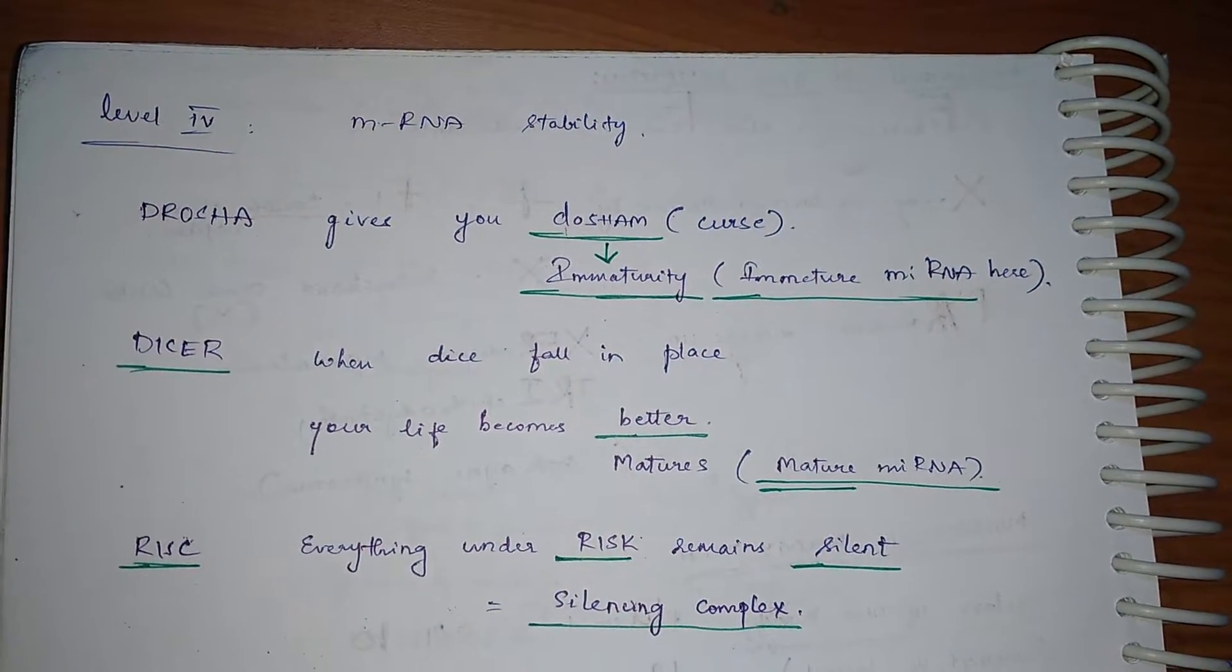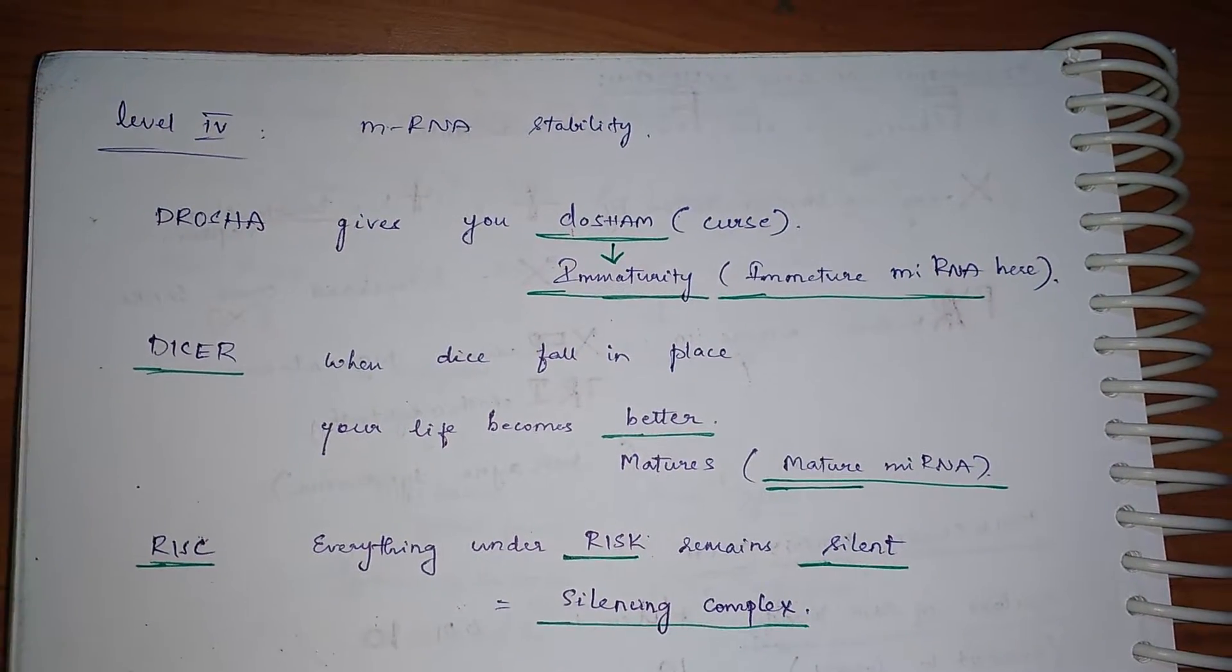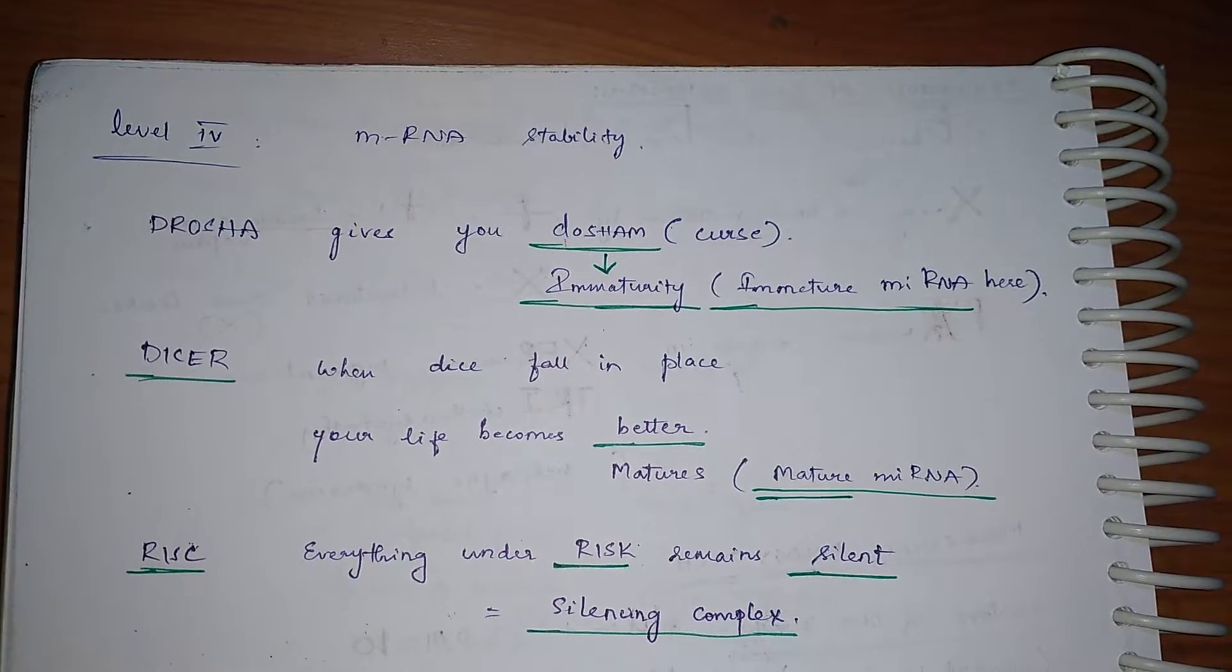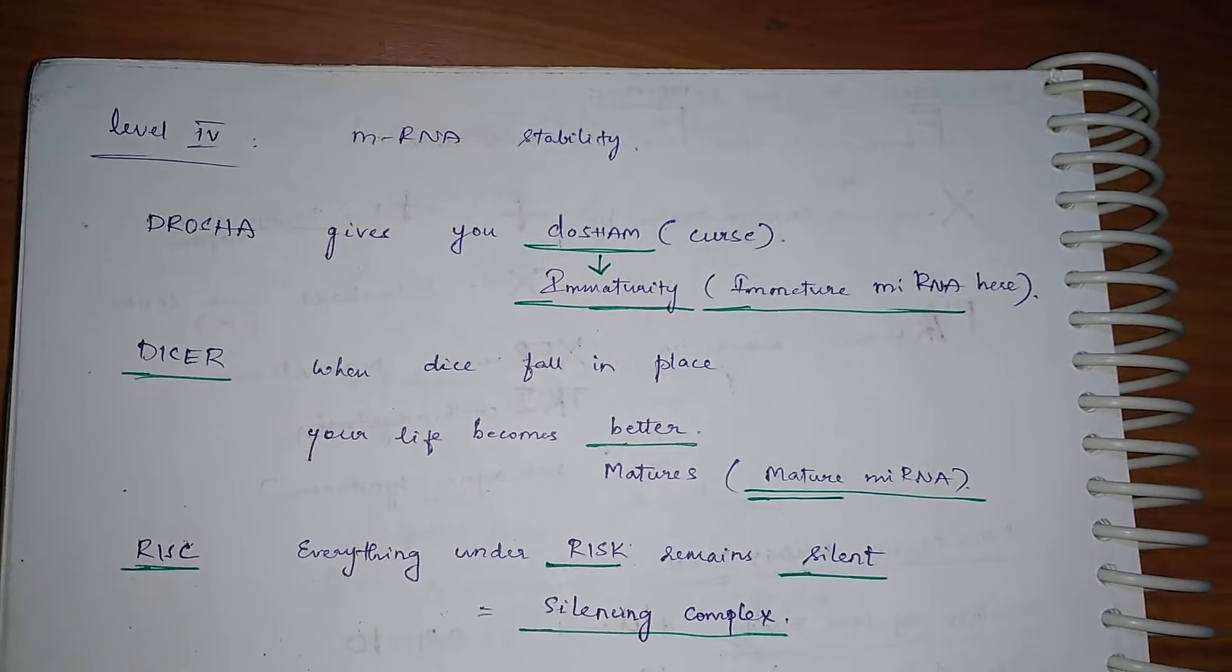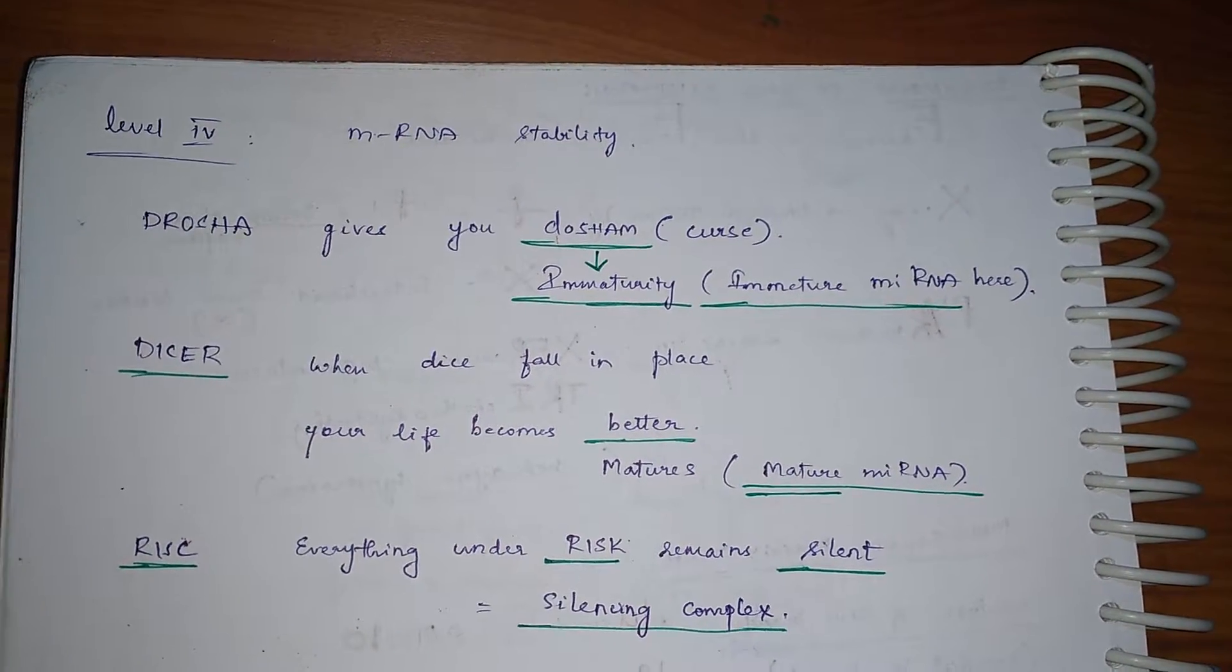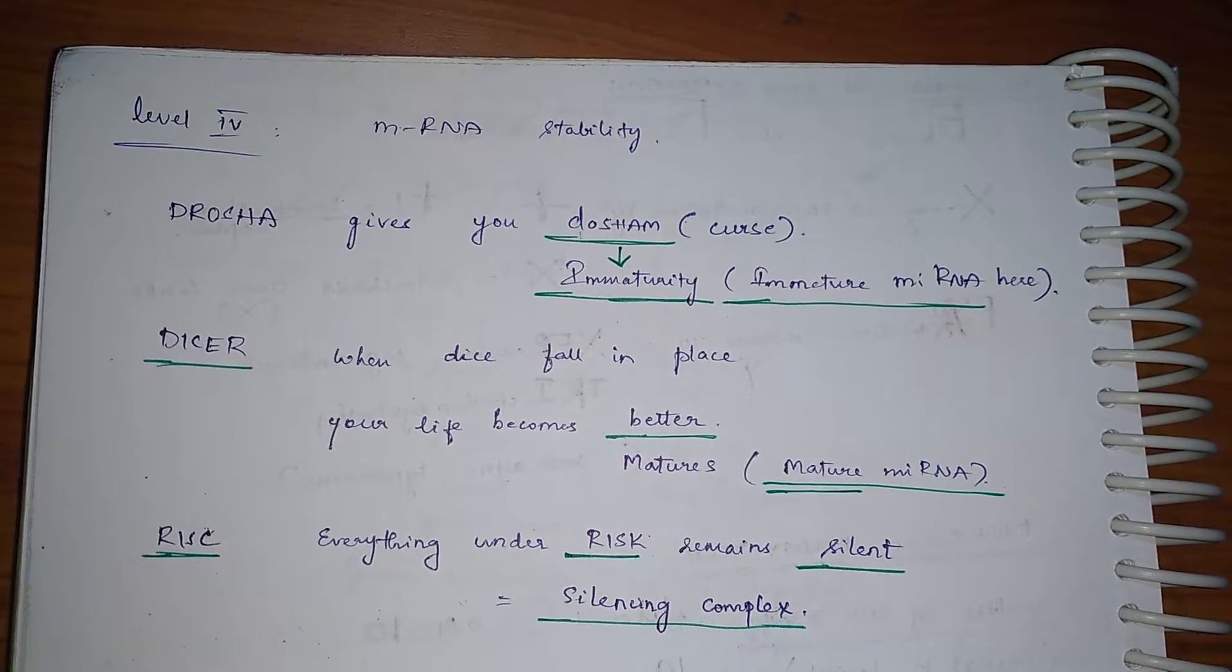Hi guys, welcome back to Medical Pneumonics Pocket. Today we have a mnemonic for mRNA stability, that is the factors which don't allow the mRNA to express.